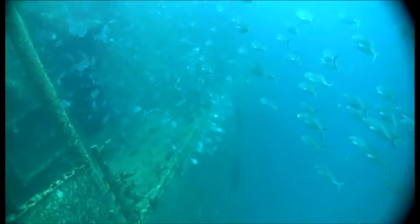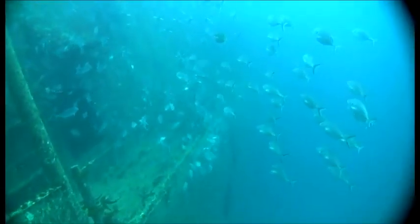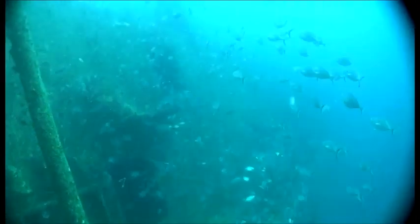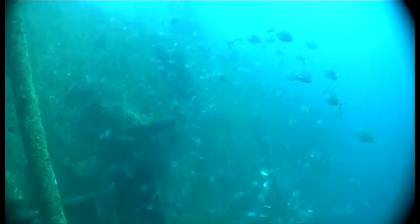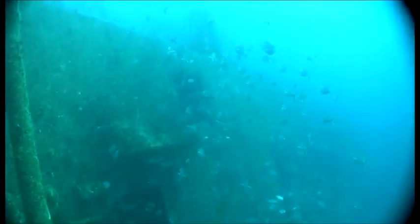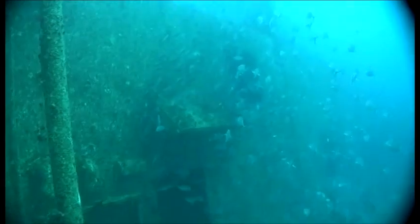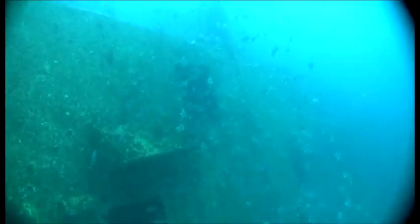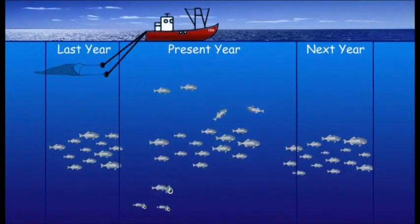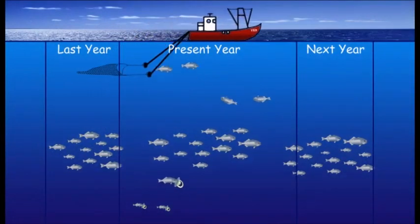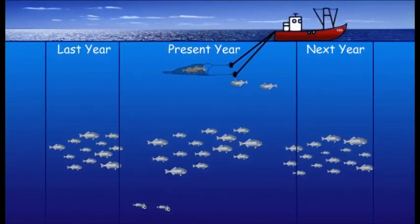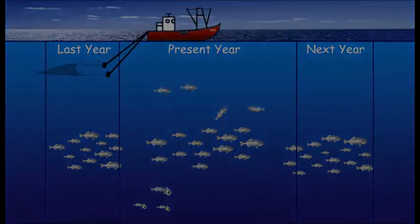In essence, a fish stock is a single species of fish that breeds, grows and moves within boundaries — and that is how it should be managed. Now we understand what a fish stock is, in the next section we'll be looking at how fish stocks grow through recruitment.